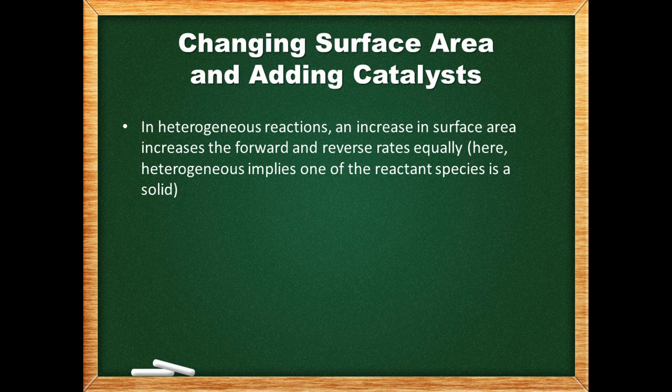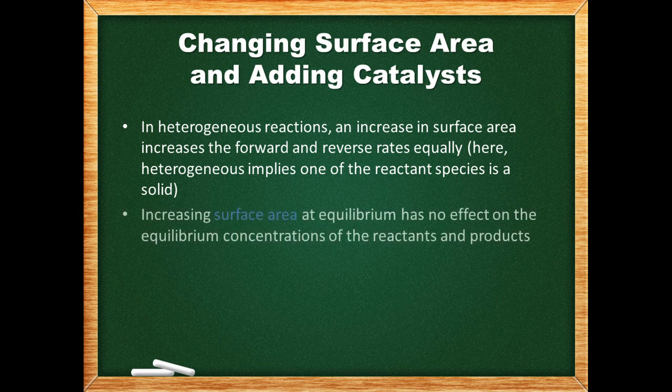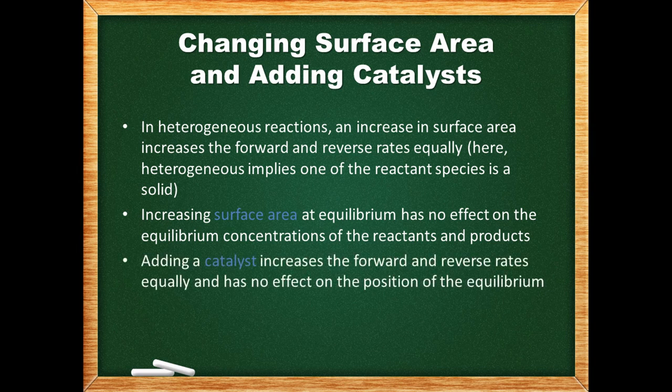In heterogeneous reactions, since both forward and reverse reactions occur at the same surface, an increase in surface area increases the forward and reverse rates equally. Therefore, increasing surface area at equilibrium has no effect on the equilibrium concentrations of the reactants and products. Adding a catalyst will increase the forward and reverse reaction rates equally and has no effect on the position of the equilibrium either.